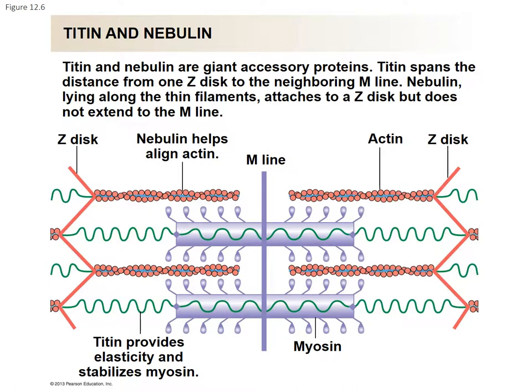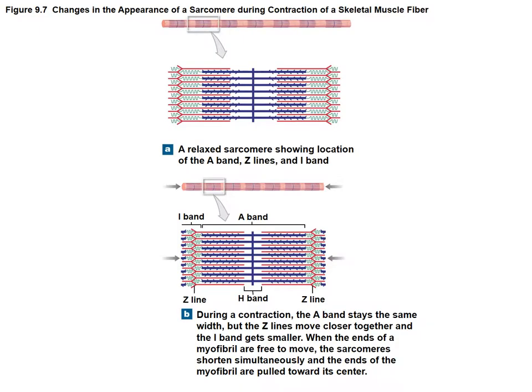Here we can see another view of titin and nebulin. Titin coils all the way through the myosin, anchoring it directly to the actin, and makes up the largest amount of protein volume of a muscle. Nebulin is simply an anchor for all the G-actin molecules and helps keep them aligned. Upon contraction, the A-band stays the same, simply darkening in color, but the Z-lines move closer together and the I-band gets smaller. When the ends of the myofibrils are free to move, the sarcomere shortens simultaneously and the ends of the myofibril are pulled towards its center — this is muscular contraction.